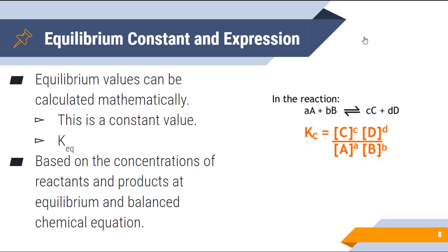We can actually calculate these values mathematically by looking at something known as the equilibrium constant. That constant value is labeled K, and you may see it as Kc, Keq, or Kp, depending on whether you're looking at pressure, concentration, or just equilibrium. For our sake, we're probably just going to call it Keq. This is based on the concentrations of the reactants and products at equilibrium, as well as the balanced chemical equation. If you look at the equation A + B yields C + D — a reversible reaction indicated by the double-headed arrow — the lowercase a, b, c, and d represent coefficients of your balanced chemical equation. That formula gives you your value for K, which tells you whether your reaction is going to favor more production of products or more production of reactants.